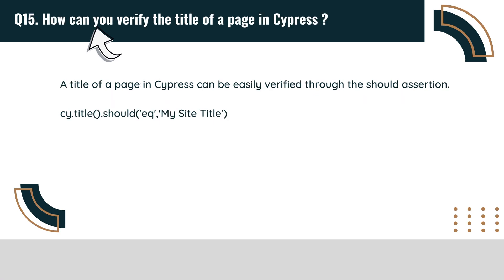How can you verify the title of a page in Cypress? A title of a page in Cypress can be easily verified through the should assertion.